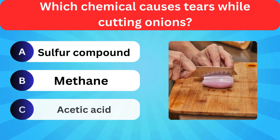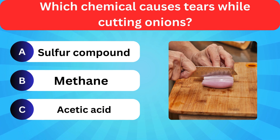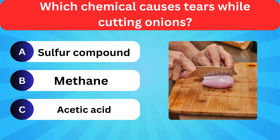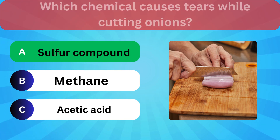Which chemical causes tears while cutting onions? Options: Sulfur compounds, Methane, Acetic acid. Correct answer is sulfur compounds.